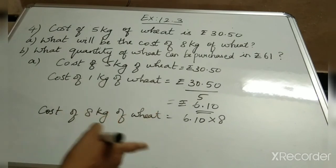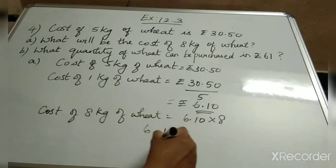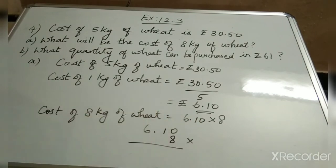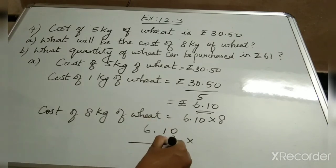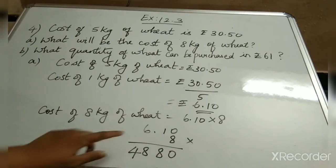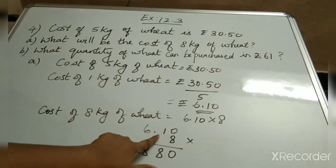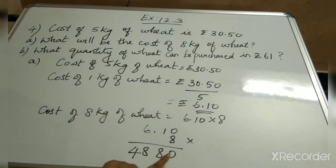I will show you how to multiply a decimal number and a whole number. 6.10 into 8 — usual multiplication. 8 into 0 is 0, 8 ones are 8, 8 sixes are 48. Now the decimal point is before 2 numbers, so in our answer we have to place the decimal point before 2 numbers.